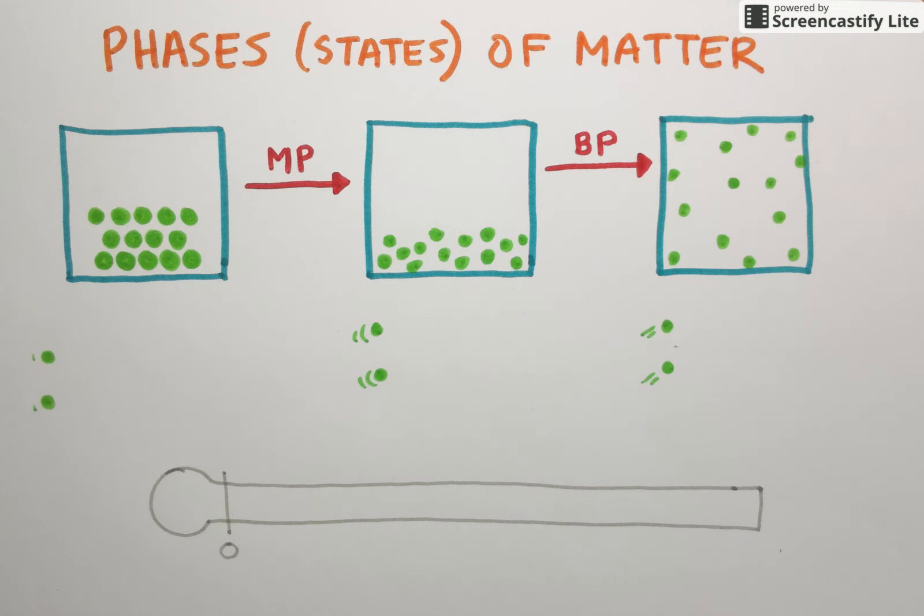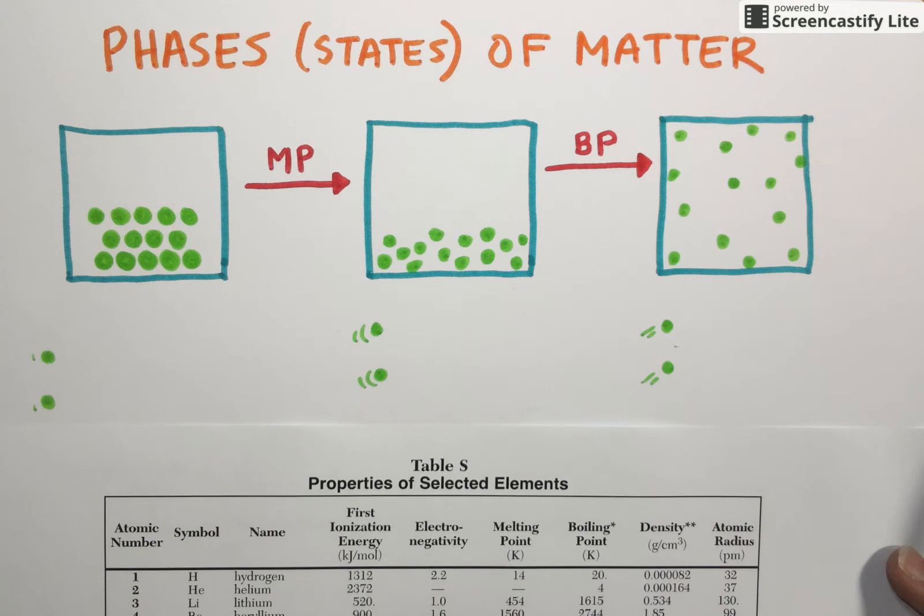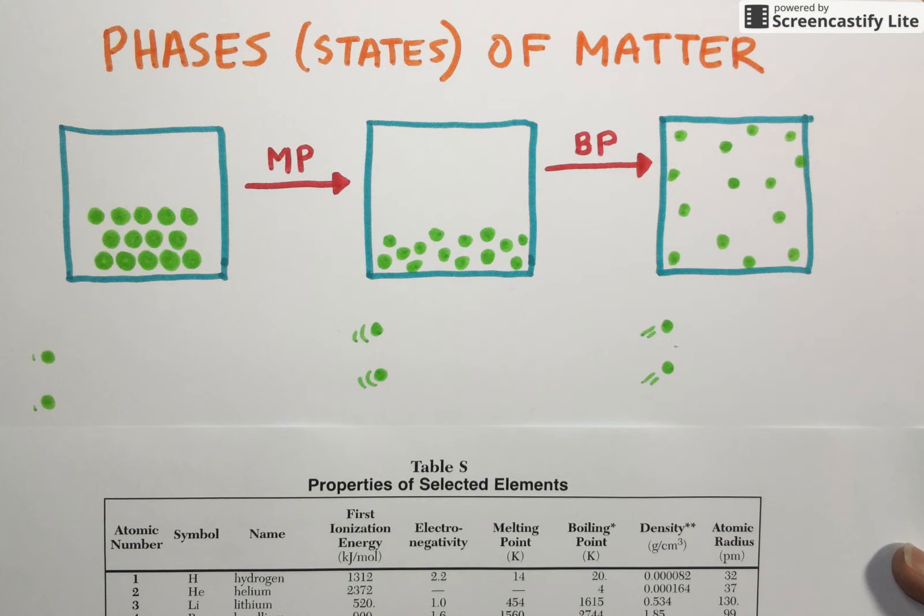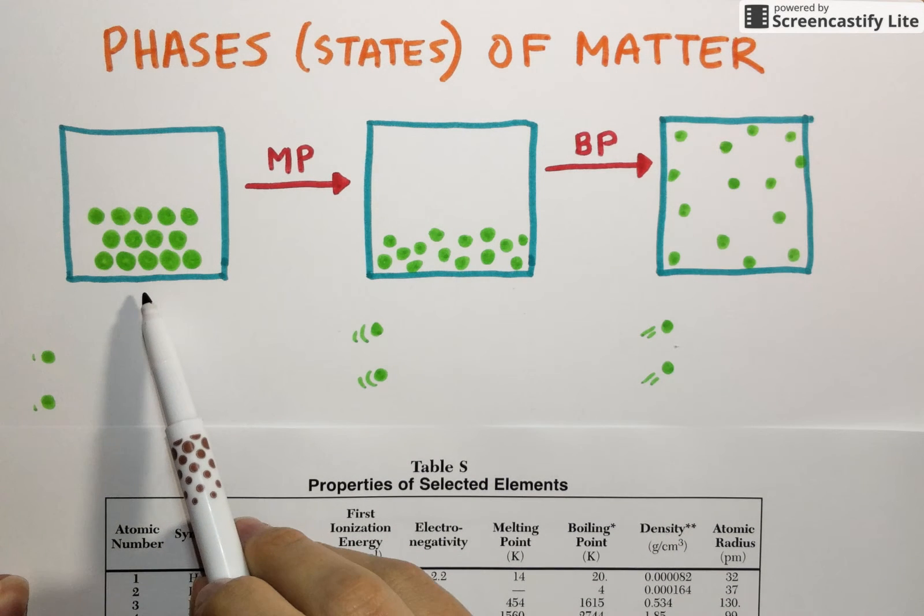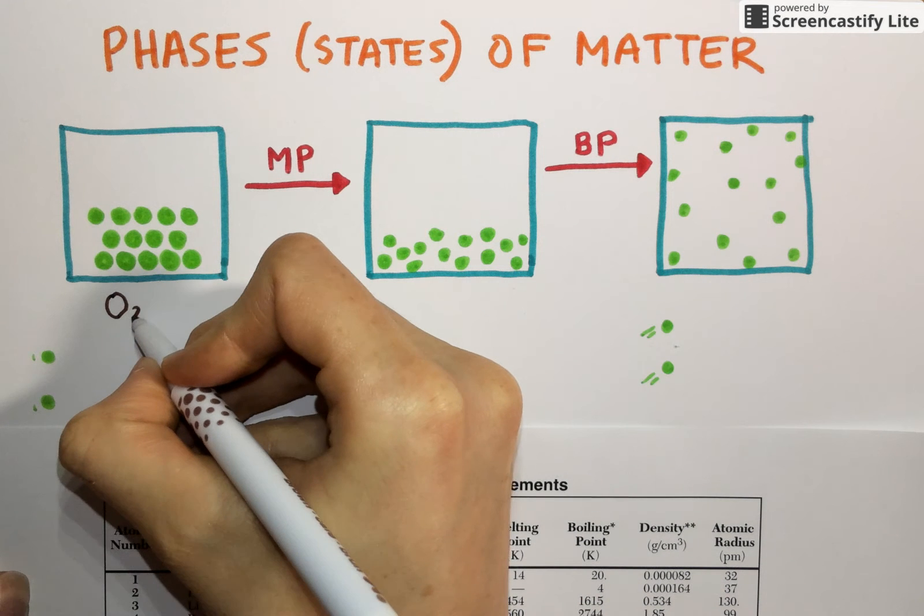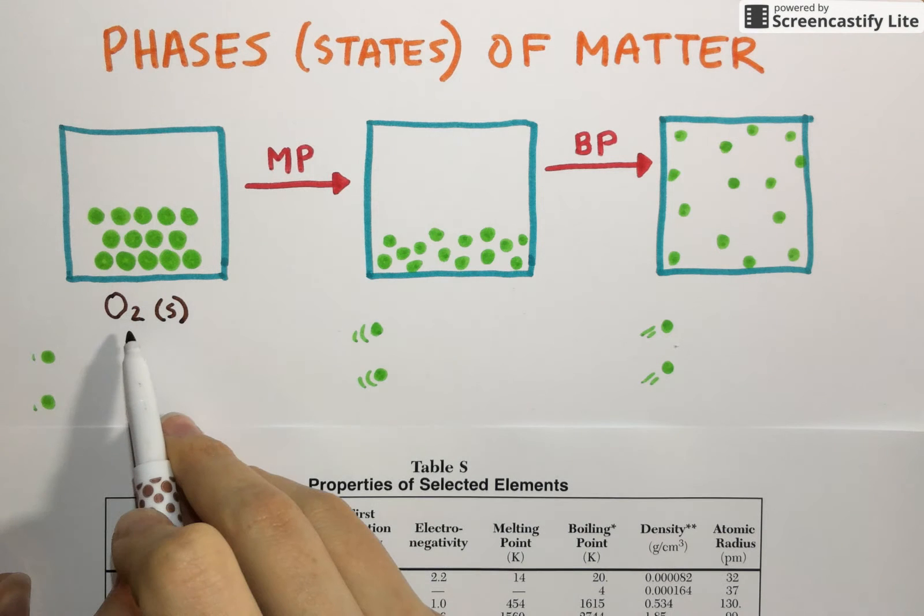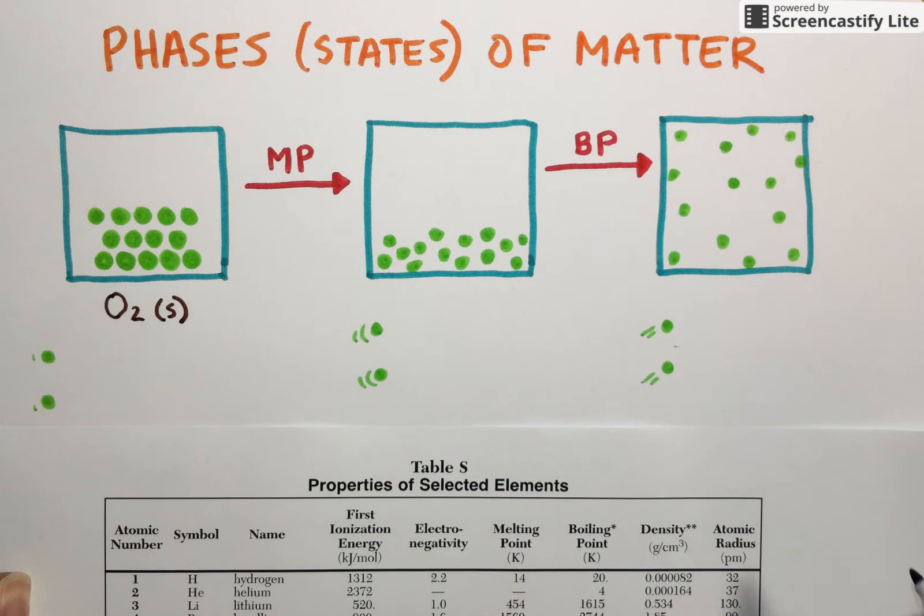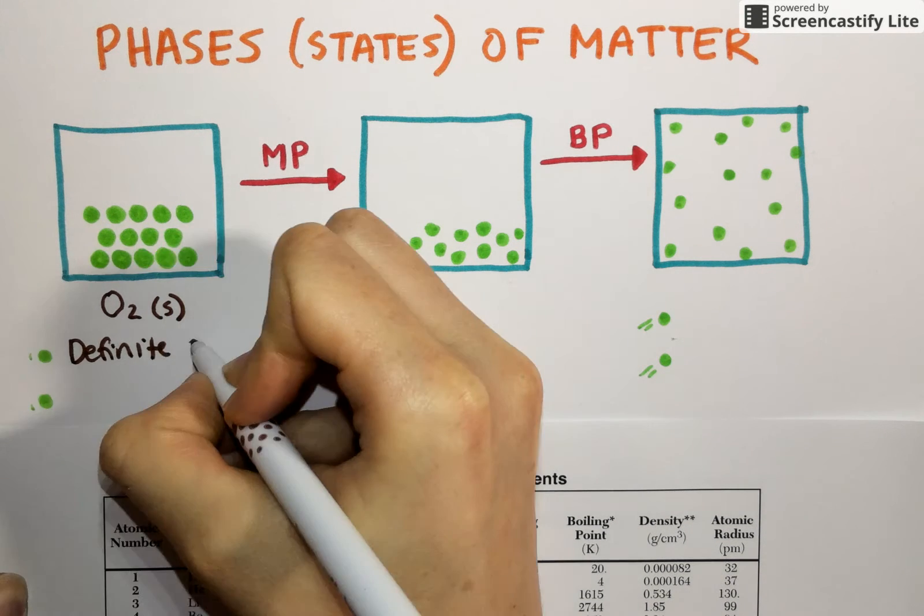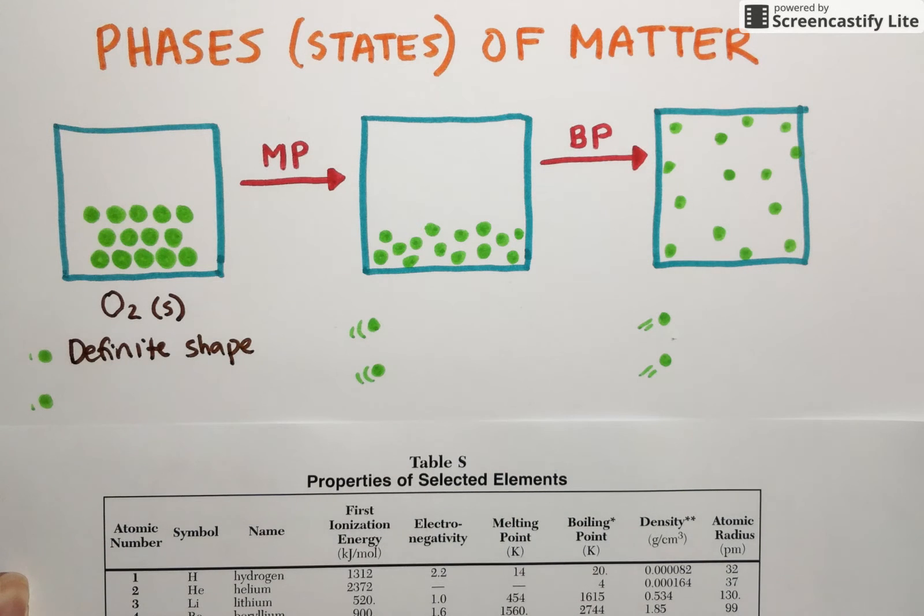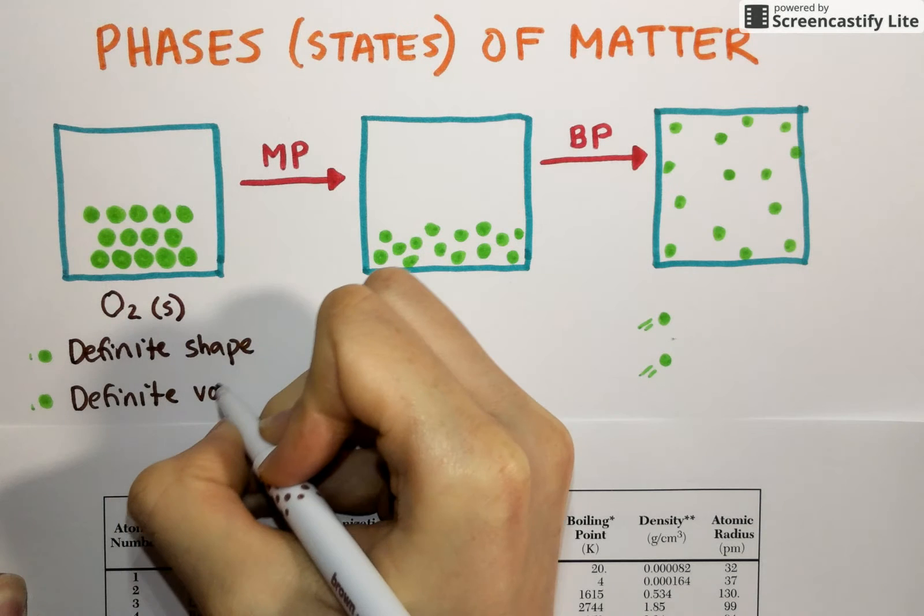I'd actually like to use an example of a specific element as we talk through these particle diagrams, and you can find a list of all the elements and their melting and boiling points on Table S in your reference table. I'm going to imagine that these green dots represent oxygen. Let's say in this left-hand box I actually have a sample of solid oxygen. I can denote that using a subscript S to show that the oxygen is not in its typical gas form, but instead is existing as a solid. Just like any other solid, oxygen solid would have a definite shape and a definite volume.